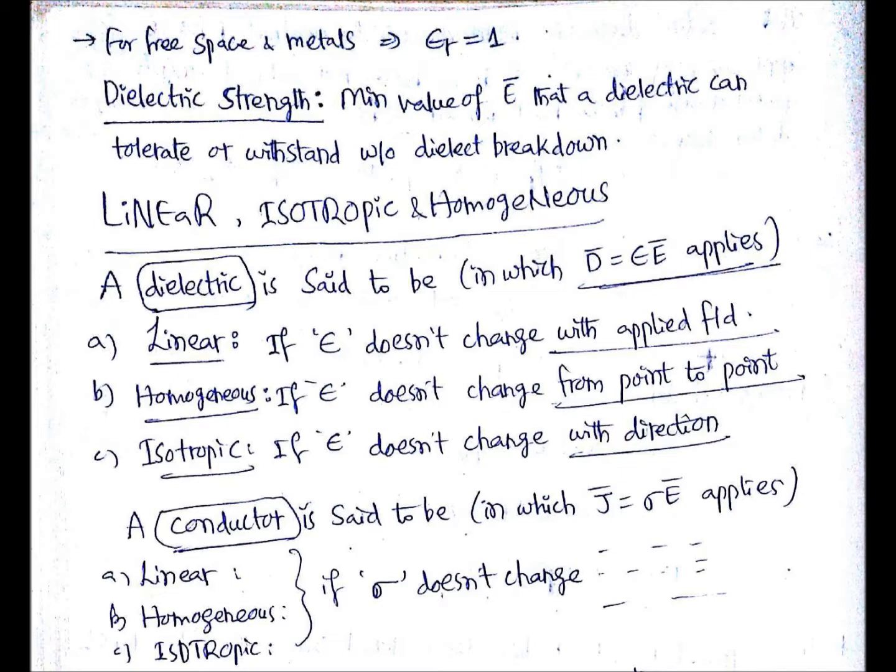We will see some important terms and definitions of dielectric materials: linear, isotropic, and homogeneous. Before that, we will see for free space and metals or conductors, permittivity or relative permittivity is one. In general, we know for free space that is one, but for metals it is also one - you need to remember that.